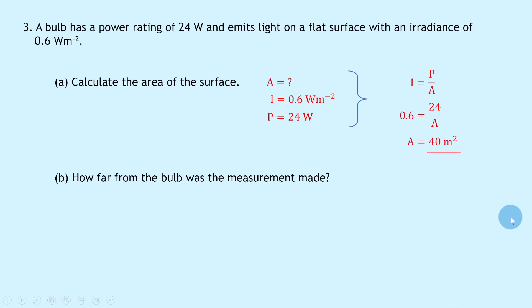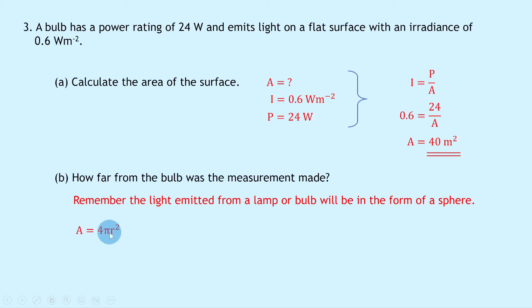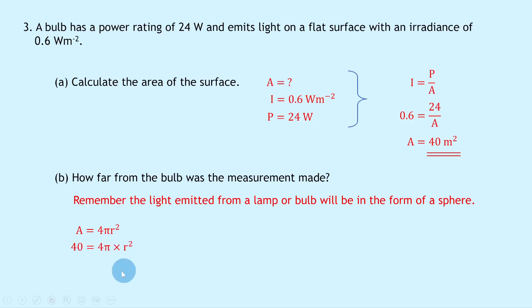Part b asks how far from the bulb the measurement was made. We need to remember that light emitted from a lamp or bulb spreads in the form of a sphere. Using the equation for the area of a sphere — which is on your relationship sheet — A equals 4πr², where r is the distance from the point source. Substituting our area: 40 equals 4π times r squared. Dividing both sides by 4π gives r squared equals 3.18, and taking the square root gives r equals 1.8 meters.